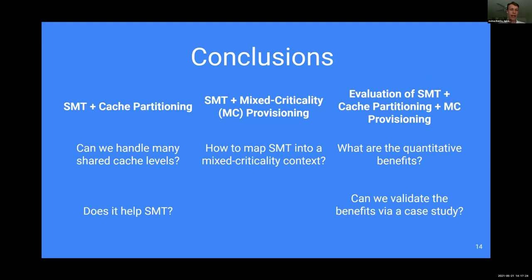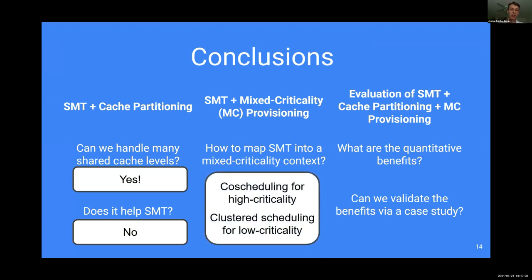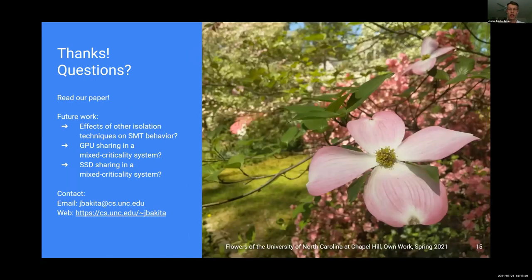In conclusion: when we combine SMT with cache partitioning, we can handle many shared cache levels and this doesn't change the SMT benefits seen in prior work. When combining SMT and mixed criticality provisioning, it's best to use co-scheduling for high criticality tasks and clustered scheduling for low criticality ones. The quantitative benefit of combining all three — SMT, cache partitioning, and mixed criticality provisioning — is a 32% increase in schedulable utilization area, validated via a case study with no deadline misses.